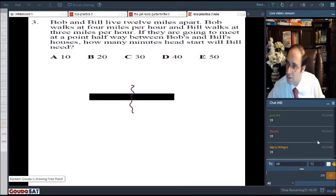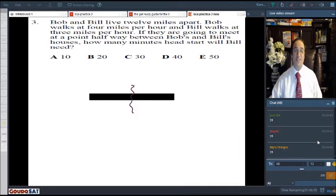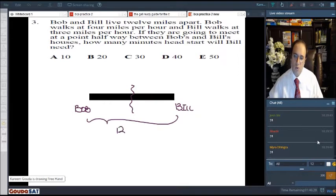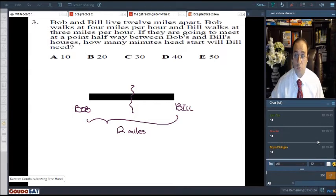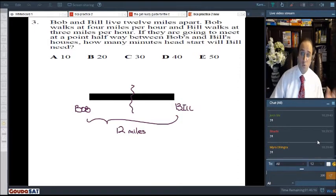Here's what we're going to do. So let's take a look at this question. Bob and Bill live 12 miles apart. So here's Bob and here's Bill. They live 12 miles apart, so this is 12 miles. And always when you have a word problem, you need to draw something, you need to write something, you can't do it in your head, trust me. Bob walks at 4 miles per hour and Bill walks at 3 miles per hour. So, this is speed, velocity, rate.